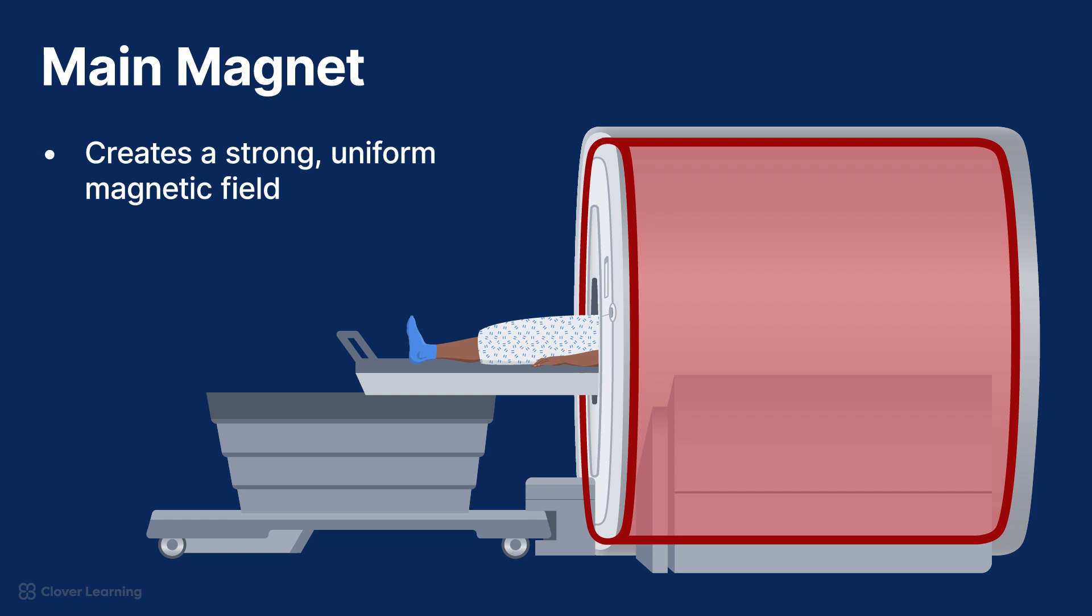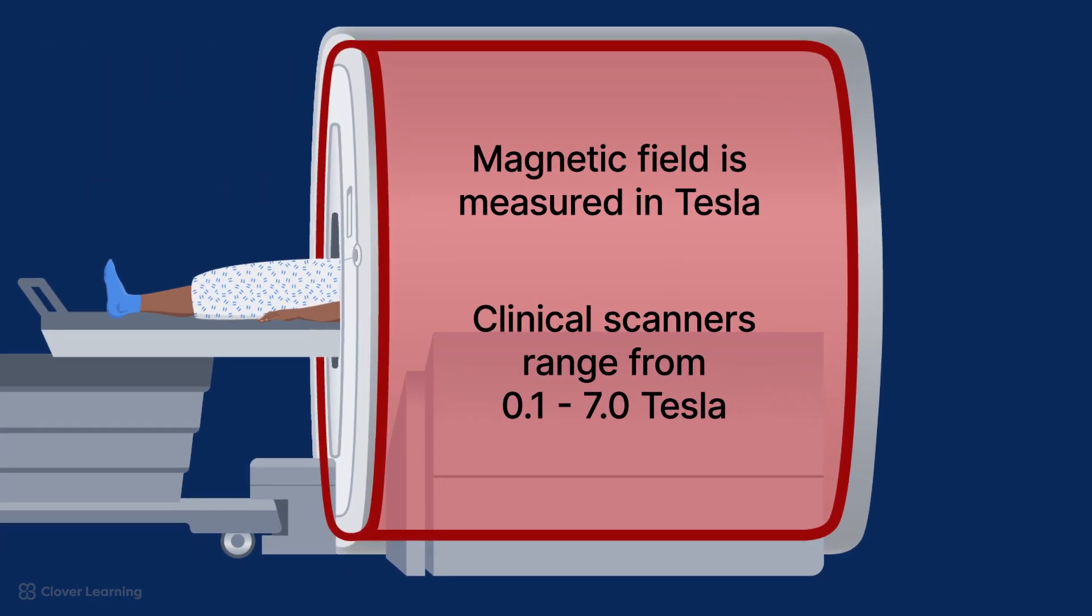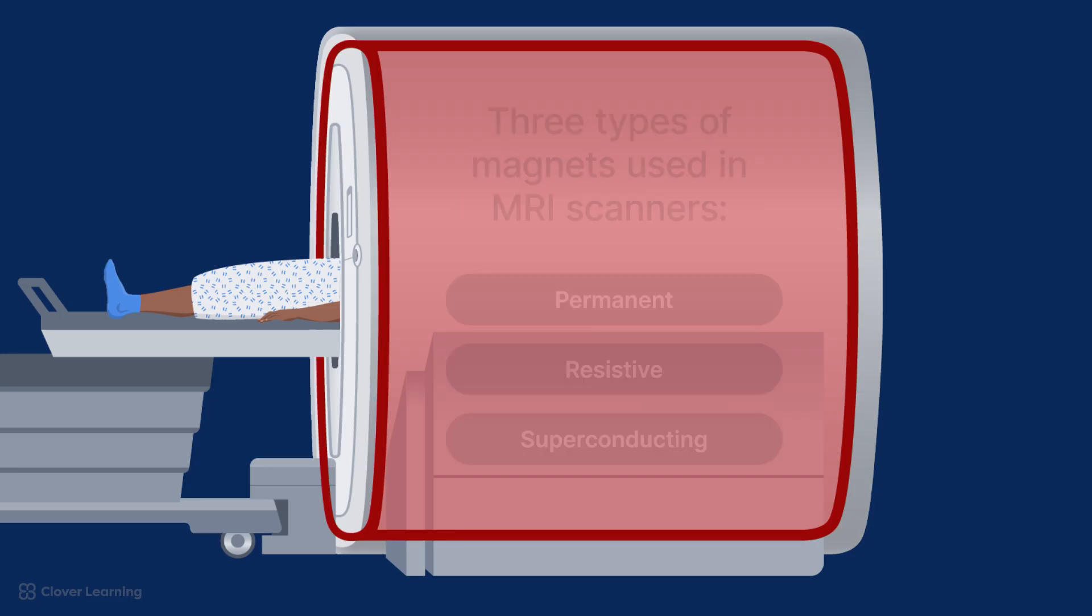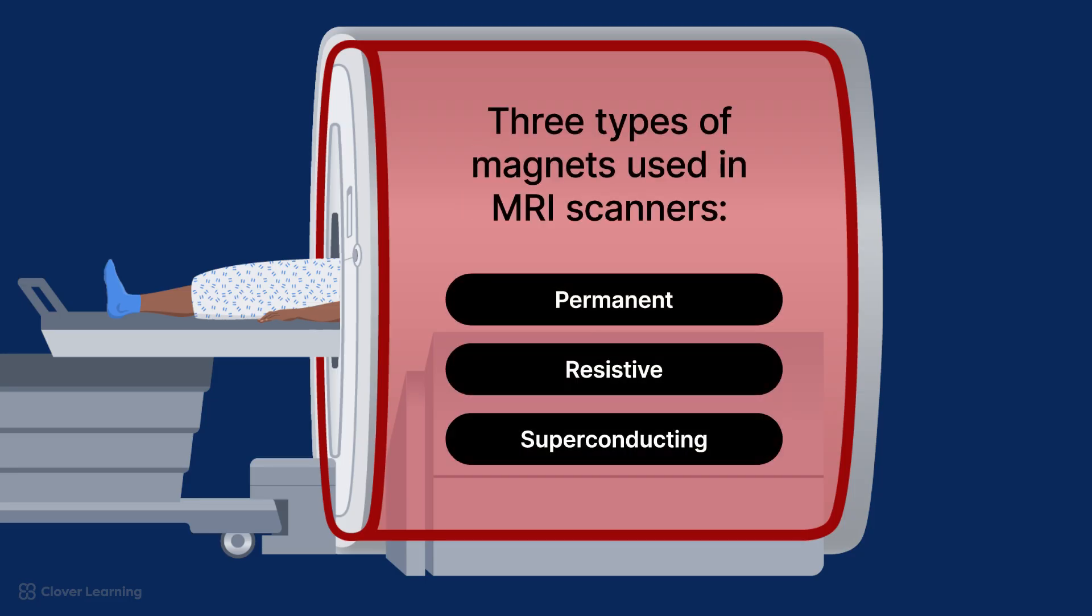The main magnet is the most important component of an MRI scanner. The main magnet creates the strong, uniform magnetic field necessary to create an MRI image. This magnetic field is measured in Tesla, and clinical scanners range in strength from 0.1 Tesla to 7 Tesla. Research scanners can go as high as 45 Tesla. There are three types of magnets used in MRI scanners: permanent, resistive, and superconducting. Superconducting is the most common.